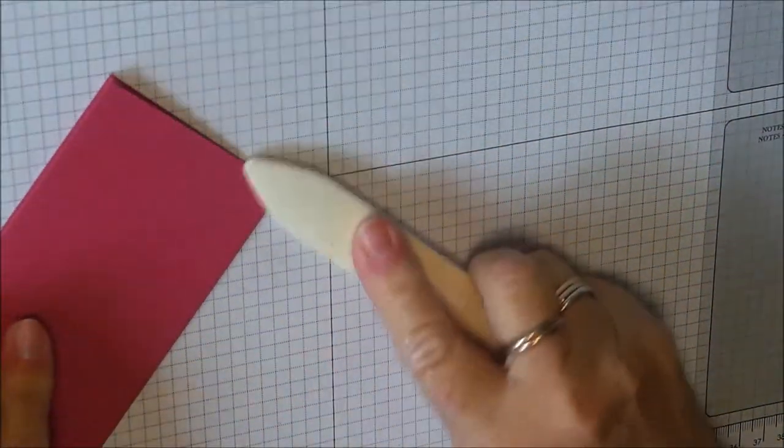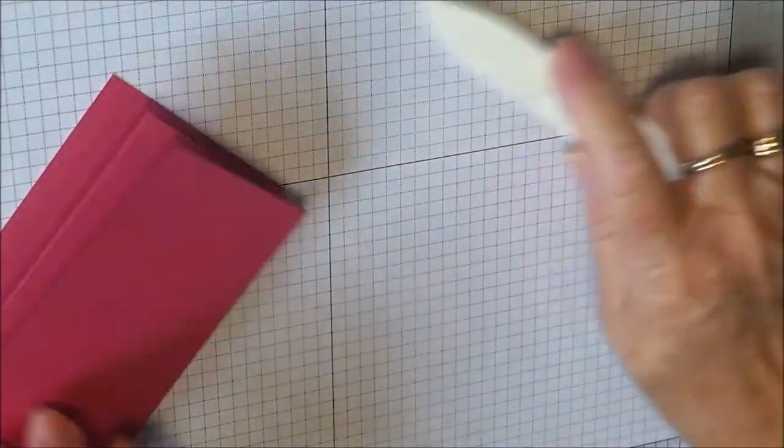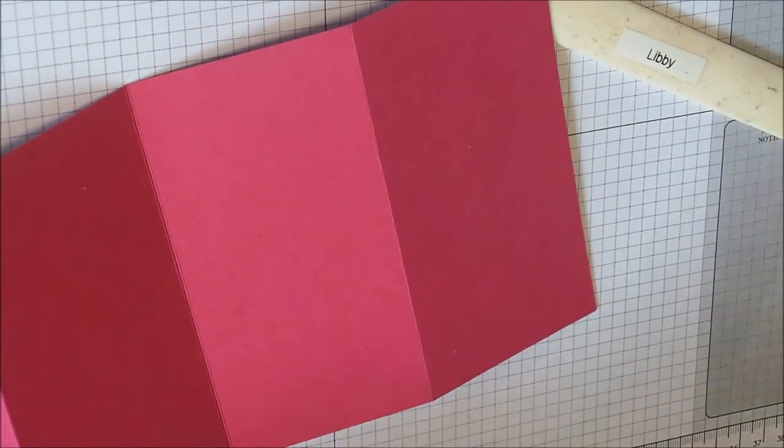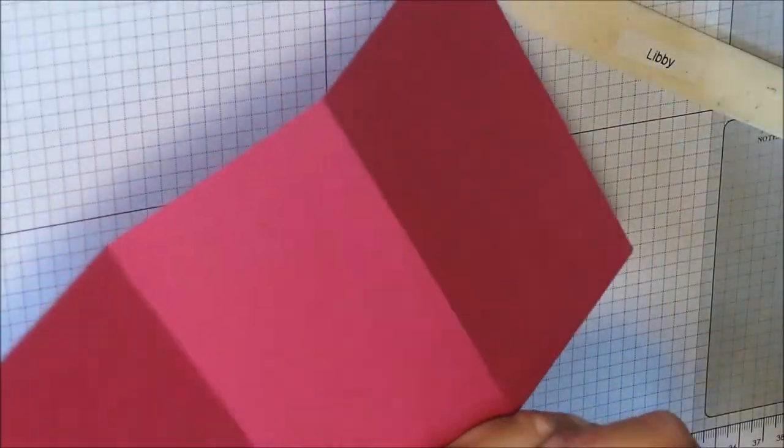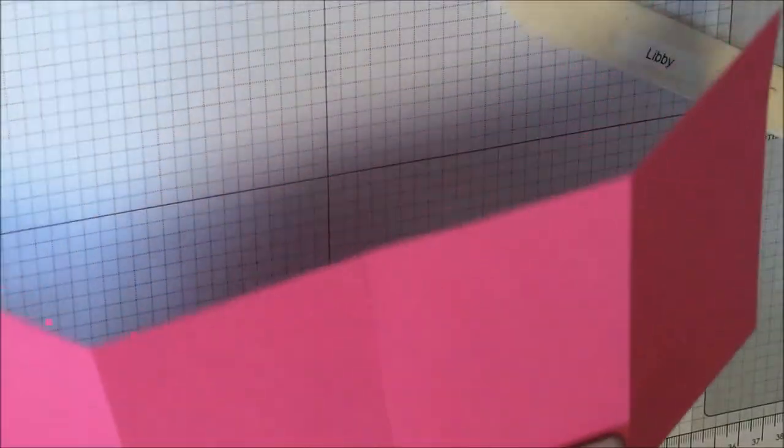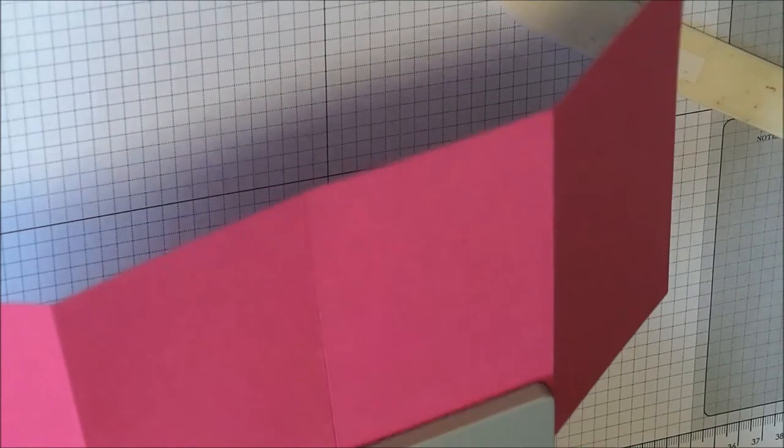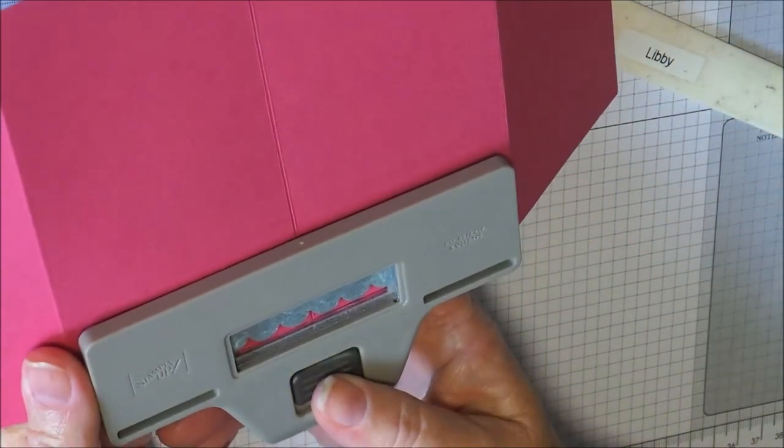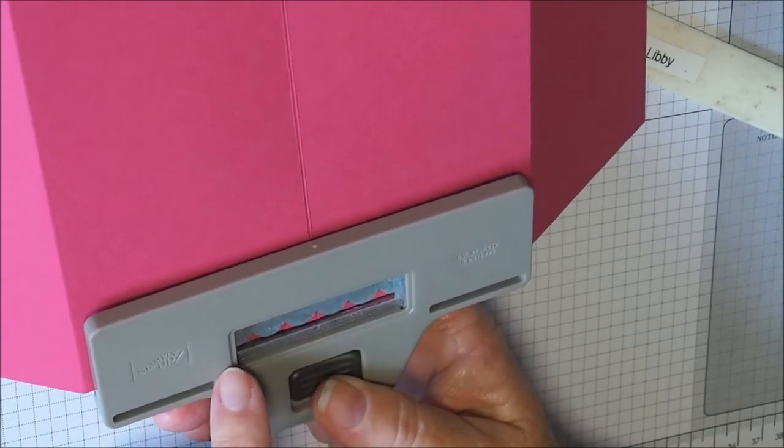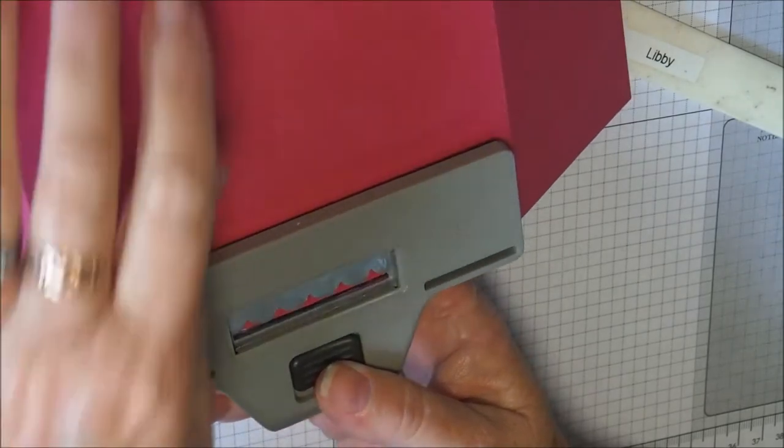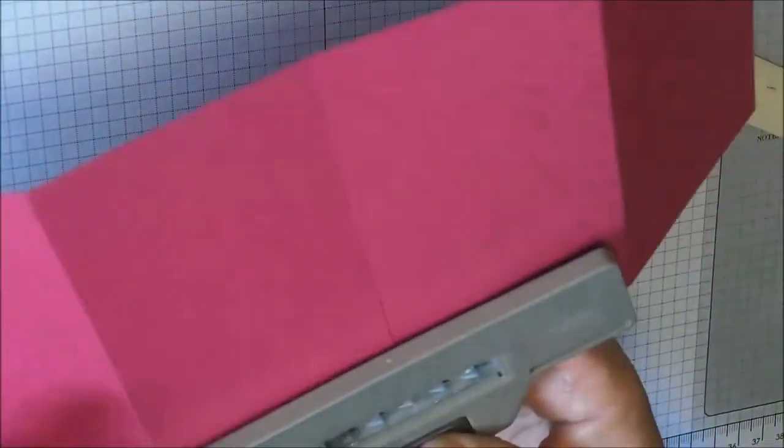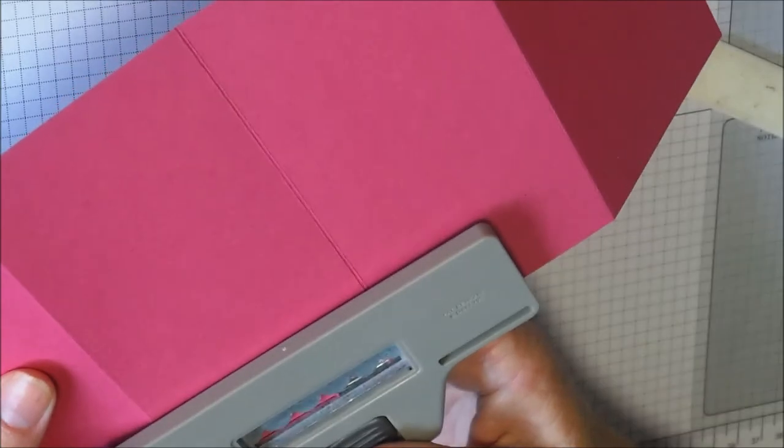Then I've got my scallop border punch. About the middle of my card, so that's the second score, I'm going to line that up there with the middle of my scallop border punch. That's my middle, and then I'm going to punch down. Then I'm going to punch the rest of the top of my border.